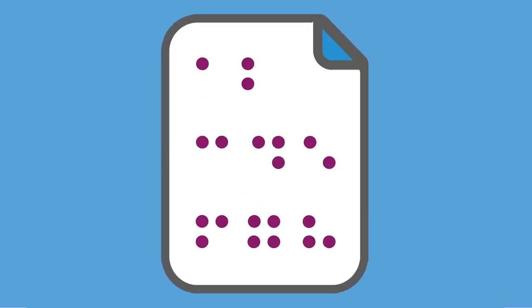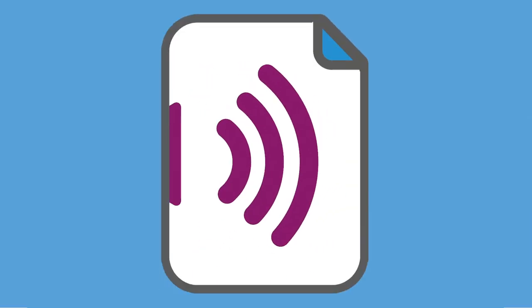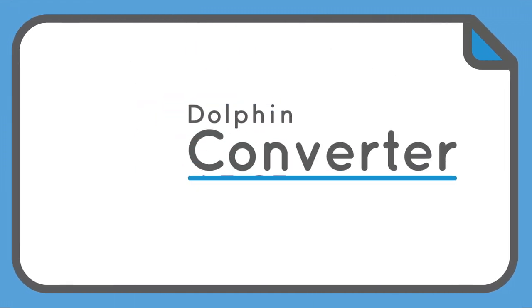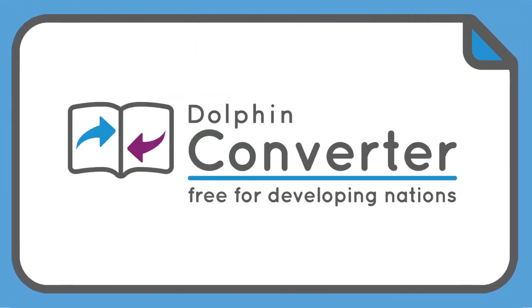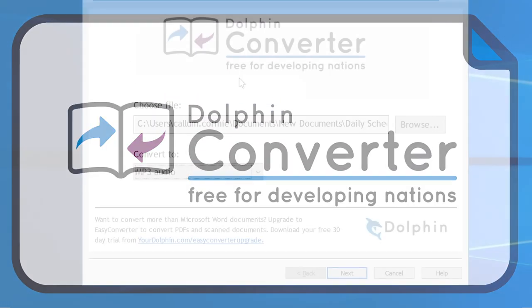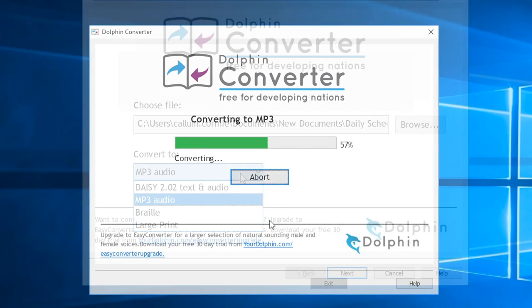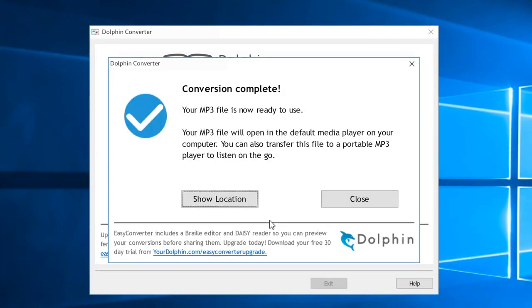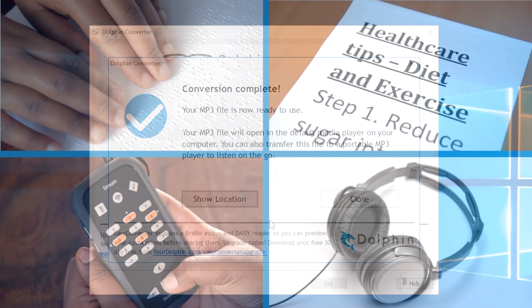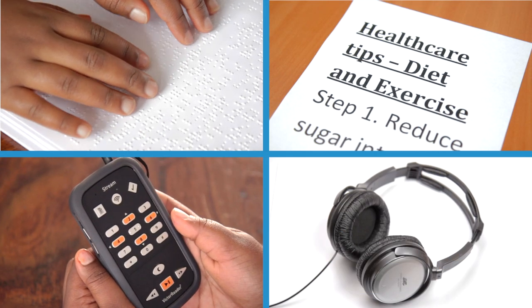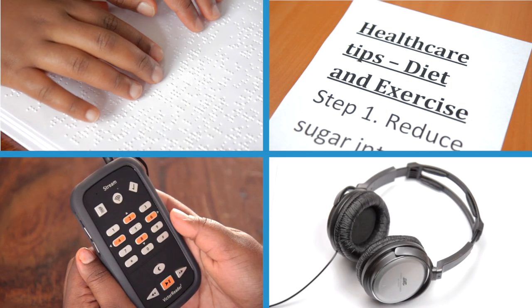Make your own braille, audio, daisy talking books or large print text with the Dolphin Converter. Convert your Word documents into any accessible format in record time and for free. We've combined all our alternative format expertise into three simple steps.